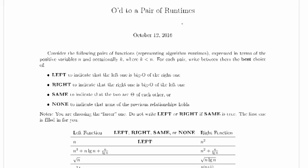Alright, let's work on Ode to a Pair of Runtimes. Consider the following pairs of functions representing algorithmic runtimes expressed in terms of the positive variables n and occasionally k, where k is less than n.